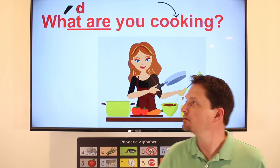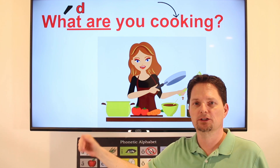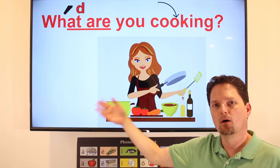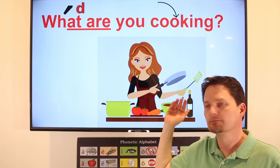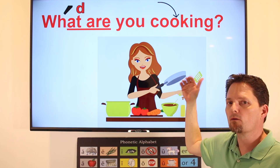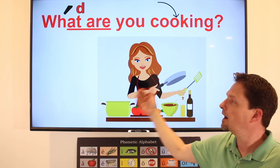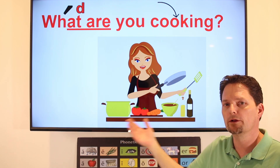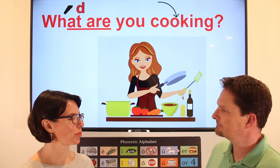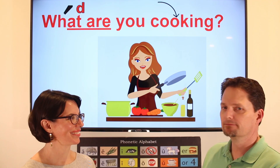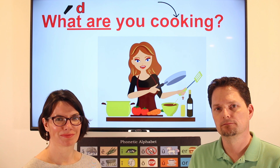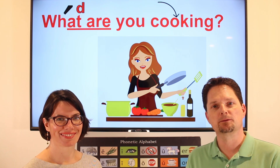Another example — 'what are' pronounced 'water,' water, water. What are you cooking? What are you cooking? You can say 'what are you cooking?' or 'what are you cooking?' Ask the question: What are you cooking? — I'm cooking soup. Ask the question. — I'm cooking soup.